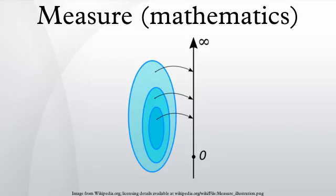The pair (X, Σ) is called a measurable space, the members of Σ are called measurable sets. If (X, Σ) and (Y, Τ) are two measurable spaces, then a function f is called measurable if for every Y measurable set, the inverse image is X measurable. The composition of measurable functions is measurable, making the measurable spaces and measurable functions a category, with the measurable spaces as objects and the set of measurable functions as arrows.